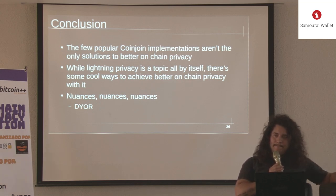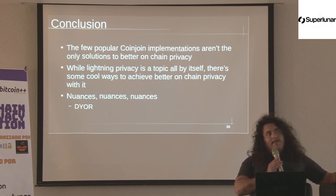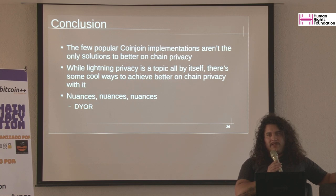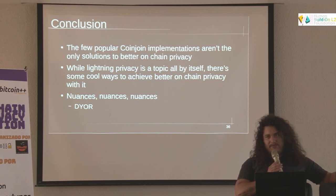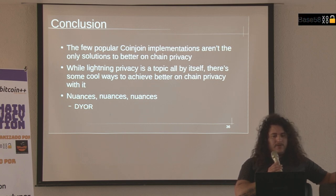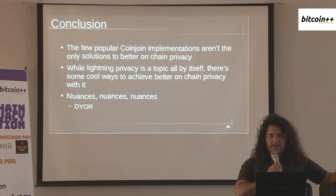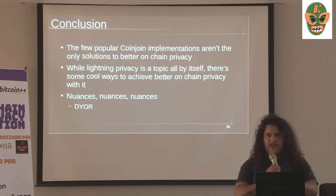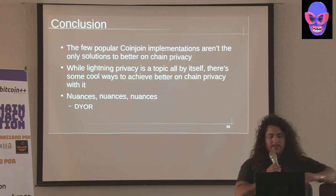Question about block space usage comparison of each of these solutions. I haven't done a block space comparison. FediMint would probably be the most scalable — you can come in and exit through Lightning without any on-chain footprint at all. With atomic swaps, there are two on-chain transactions per swap, so it's a poor choice for a daily spending wallet like Moon. But for one-shots where you have one Bitcoin you want to swap, two on-chain transactions isn't the end of the world. Mercury wallet has an internal state-chain system giving less on-chain footprint once you're in.